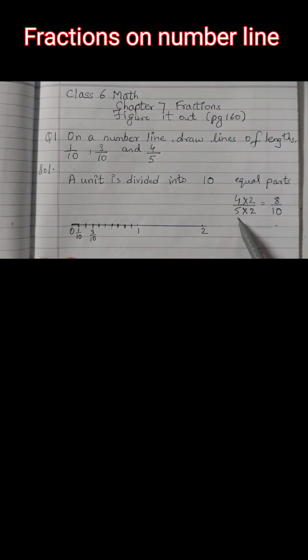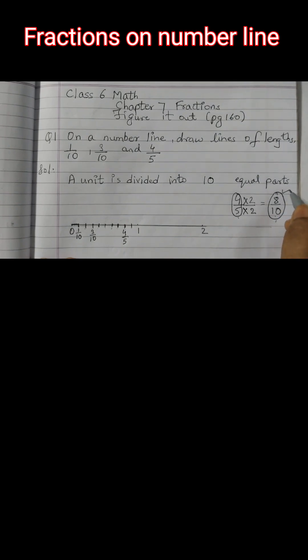This will be 8 upon 10. That means 4 upon 5 is equal to 8 upon 10. We will see 8 parts here: 1, 2, 3, 4, 5, 6, 7, 8. This part here is 4 upon 5 because 4 upon 5 is equal to 8 upon 10. These are equivalent fractions. So these have equal values and we can show it on the same number line.